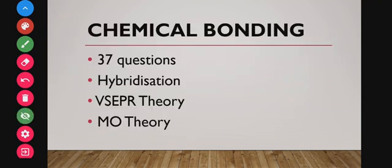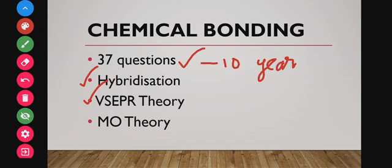Coming to the first topic, which is chemical bonding — around 37 questions were asked from this chapter by analyzing the last 10-year past question papers. In chemical bonding, hybridization, VSEPR theory, and MO theory (molecular orbital theory) — these three topics are very very important in consideration with the NEET examination.